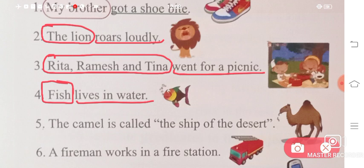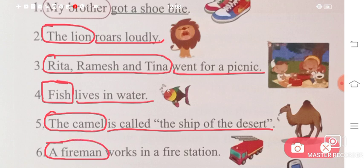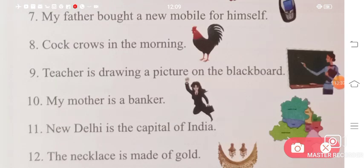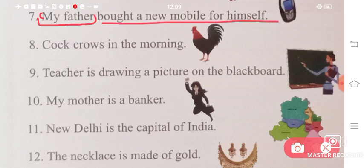'The camel is called the ship of the desert.' What are we talking about? The camel. What are we saying? Is called the ship of the desert. 'A fireman works in a fire station.' What are we talking about? Fireman. What are we saying? Works in a fire station - that is your predicate. Next is 'My father bought a new mobile for himself.' My father will be your subject, and 'bought a new mobile for himself' is your predicate.